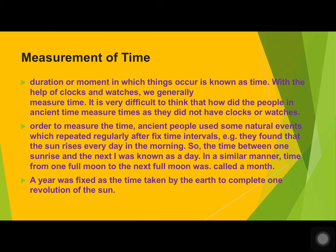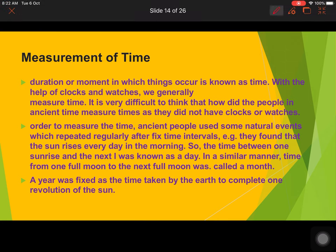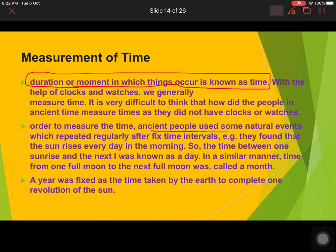Next is measurement of time. The duration or moment in which things occur is known as time, and it is measured accordingly. Since ancient times, people used natural events which repeated regularly after fixed intervals as a measurement of time. They found sunrise occurs every morning, so the time between one sunrise and the next became known as a day.